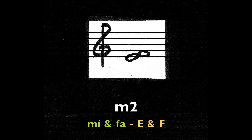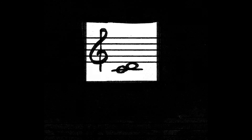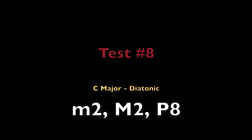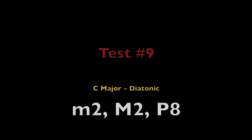Minor 2nd on MI and FA, the notes E and F. Major 2nd on DO and RE, the notes C and D. Perfect octave, T, the note B. Major 2nd, LA and T, the notes A and B.